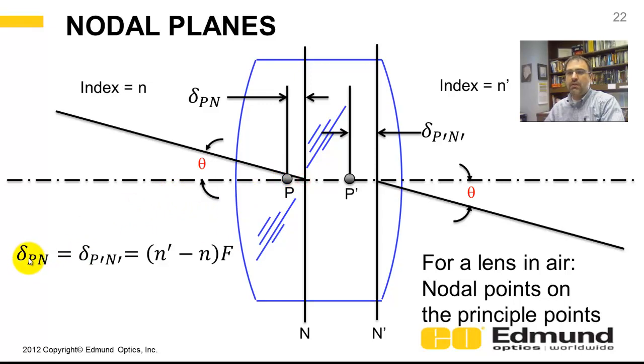The change in nodal point location from the principal plane is simply a function of the difference in the two index of refraction, image side versus object side, times the focal length.